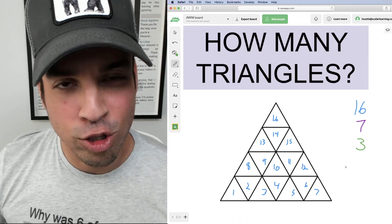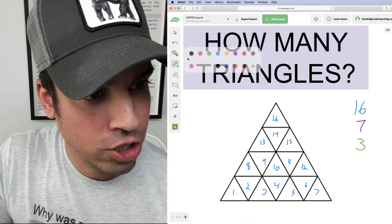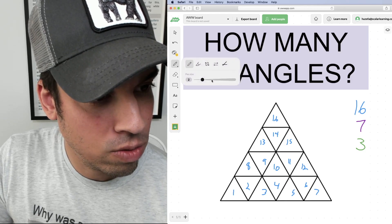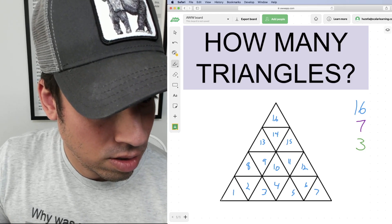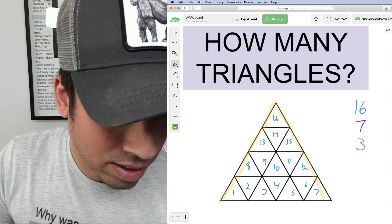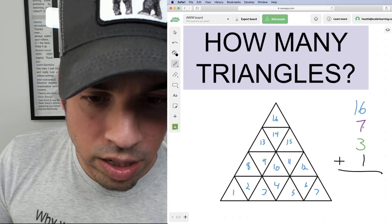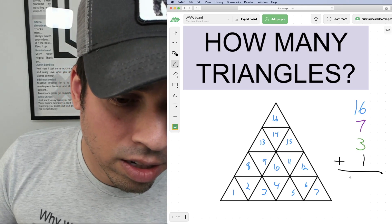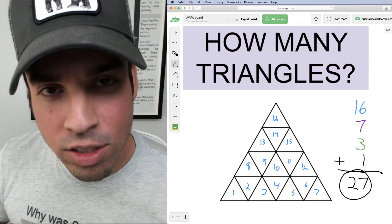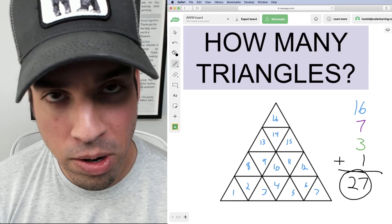Last but not least, don't forget the absolute big dog, the ultimate, which I shall do in yellow. The gigantic triangle, just like this. Add these all up and we get 23, 26, and 27. So there are in total 27 triangles in this diagram.